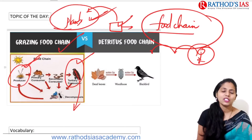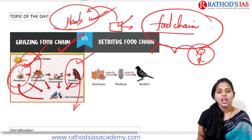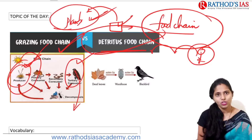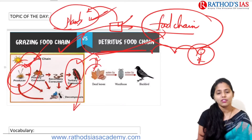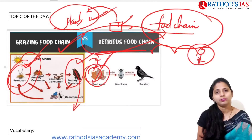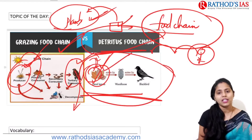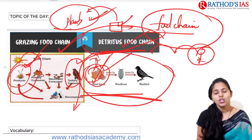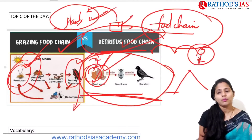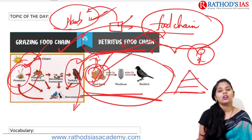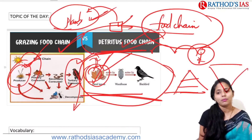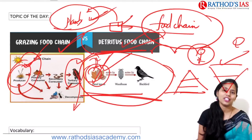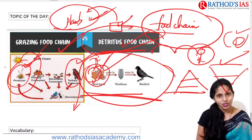The grazing food chain starts with producers, then herbivores. The detritus food chain starts with decomposing matter — when leaves dry and fall from plants, they become dead leaves that decompose; a food chain starting with this decomposing matter is called a detritus food chain. You need to know about pyramids of number — in which food chain do we see an inverted pyramid of number? Please answer in the comment box.